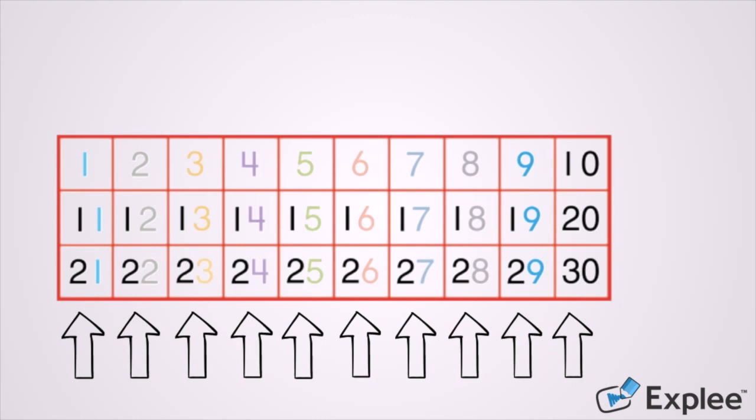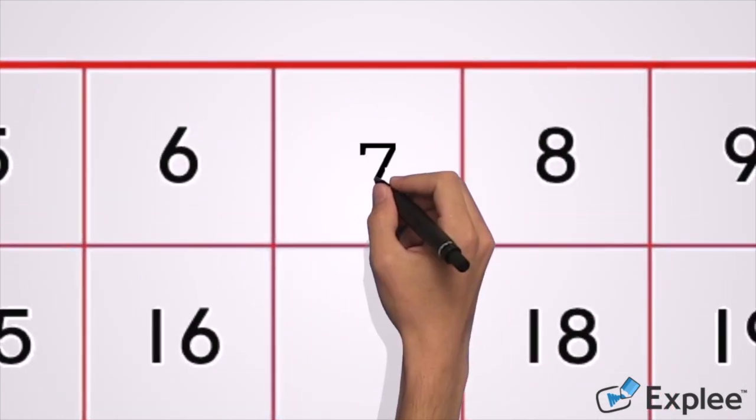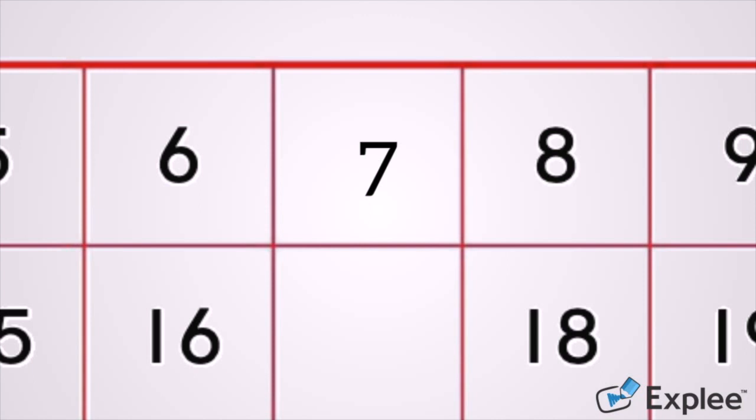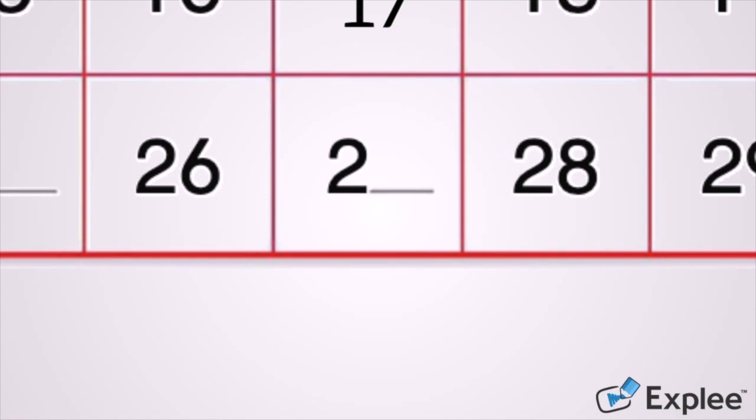We can use patterns to find the missing number in number charts. Let's look at the top row. What number comes after six? You're right, seven. Now I can fill in the rest of the numbers in that column using my understanding of patterns and columns. I know that all of these numbers need to end with a seven because in the sevens column all of them have a seven in the ones place. So the second row fills in with 17 and the next row has 27.